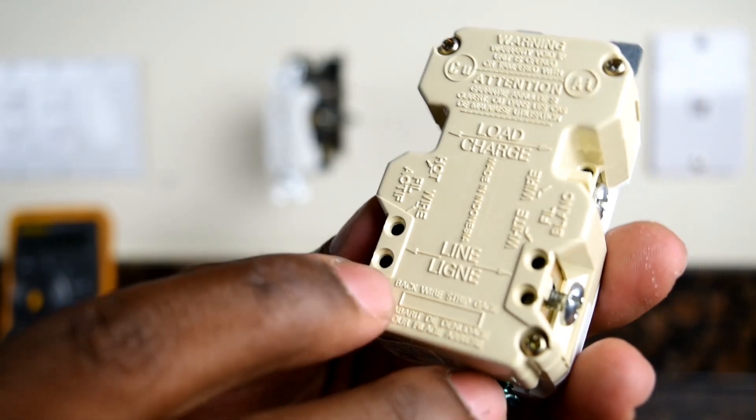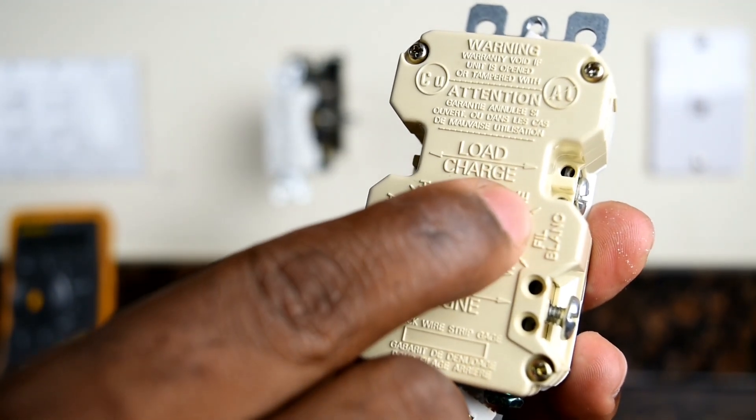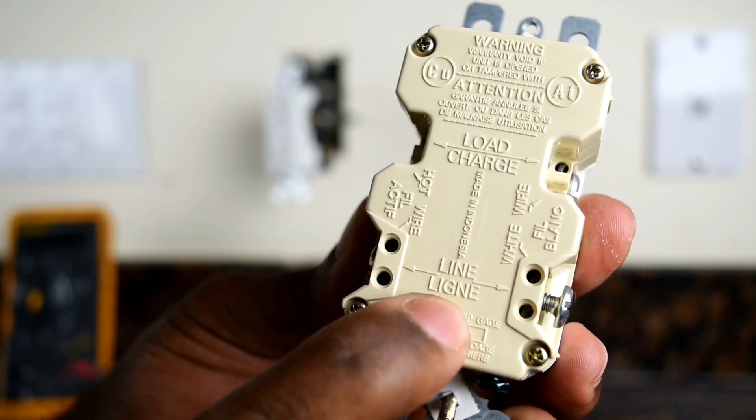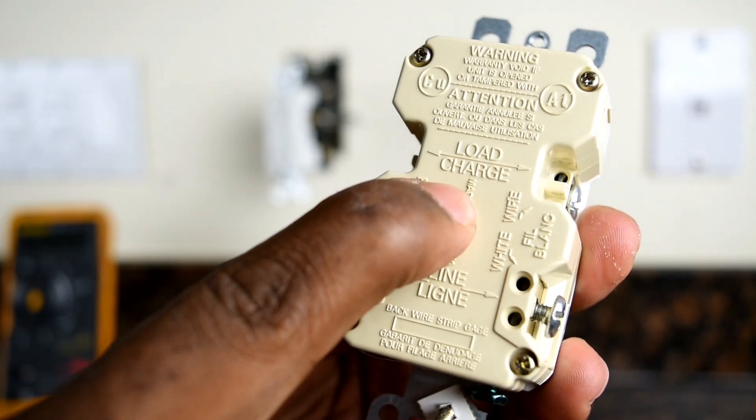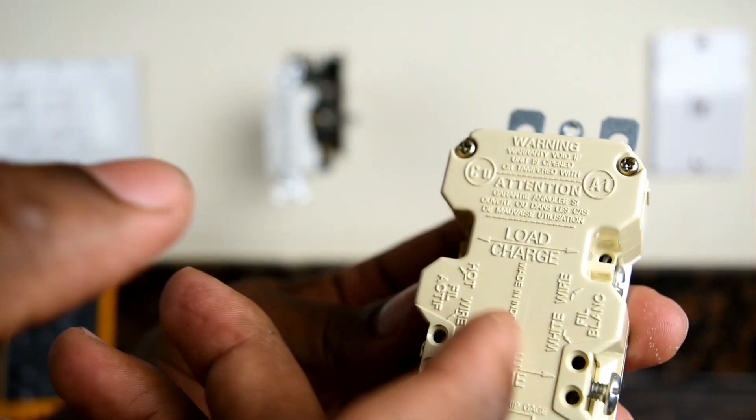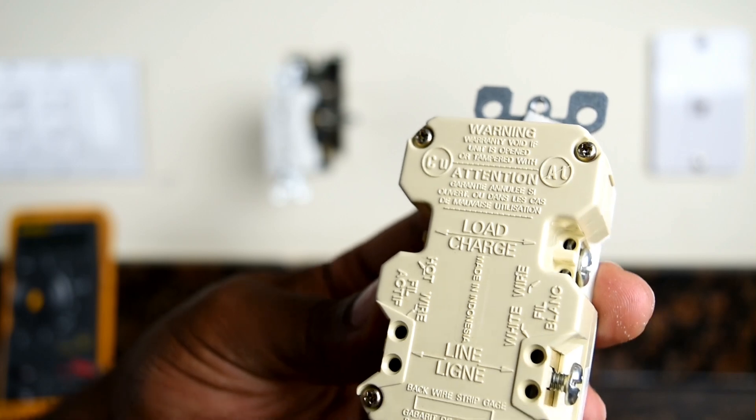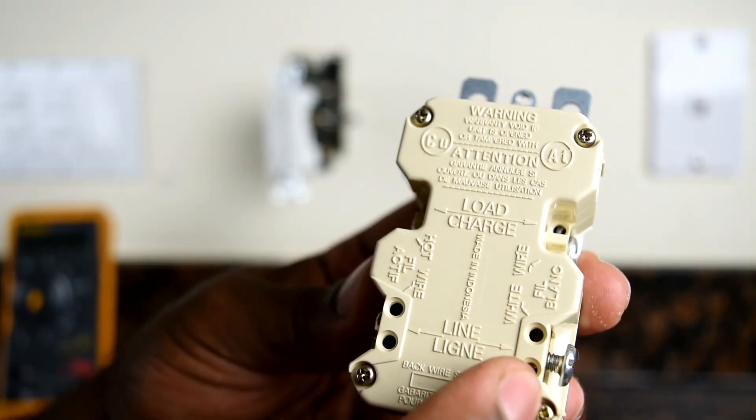So if you look on the back of the outlet here, you have a line in and you have the load. The line is what's coming from your breaker panel, and the load will be your outlets and the other outlets that's connected to it. So the load means that anything you plug in would be a load to the switch.